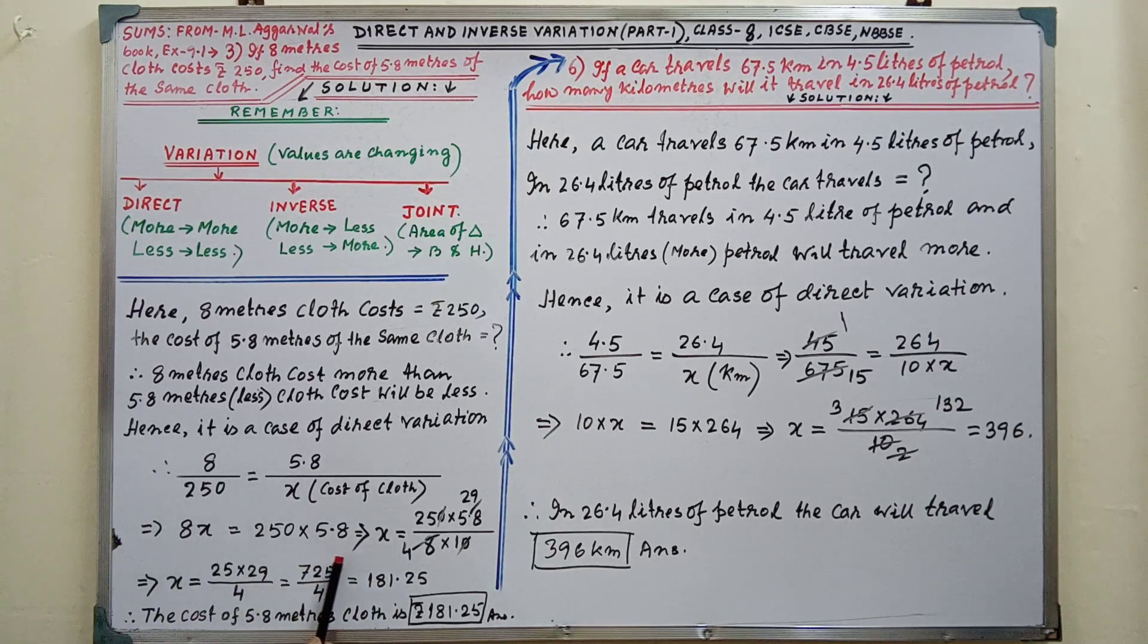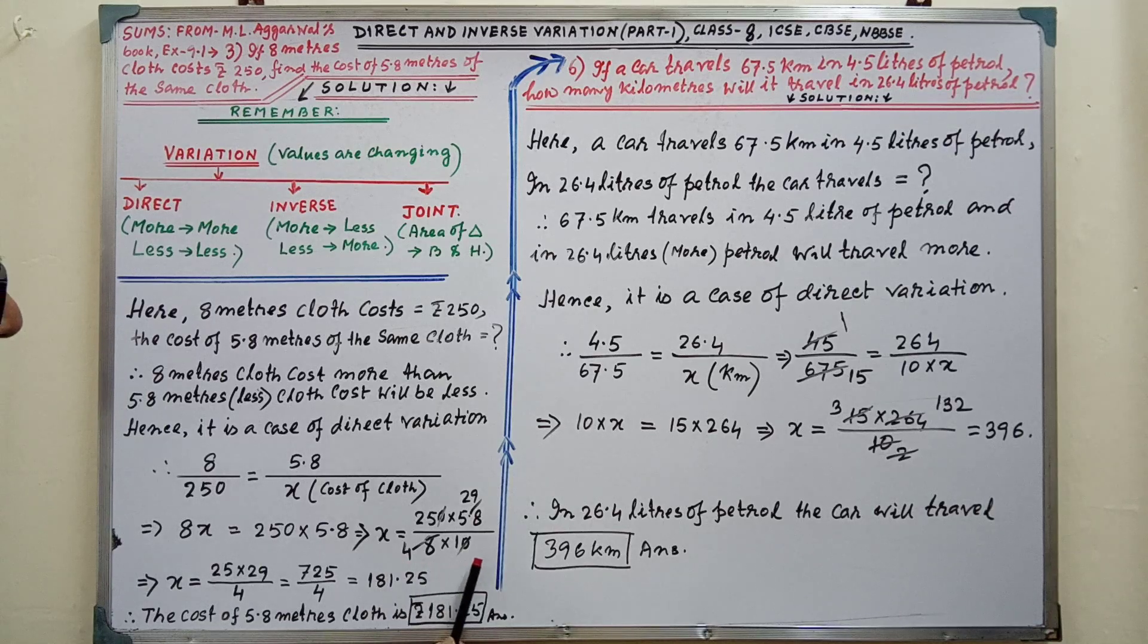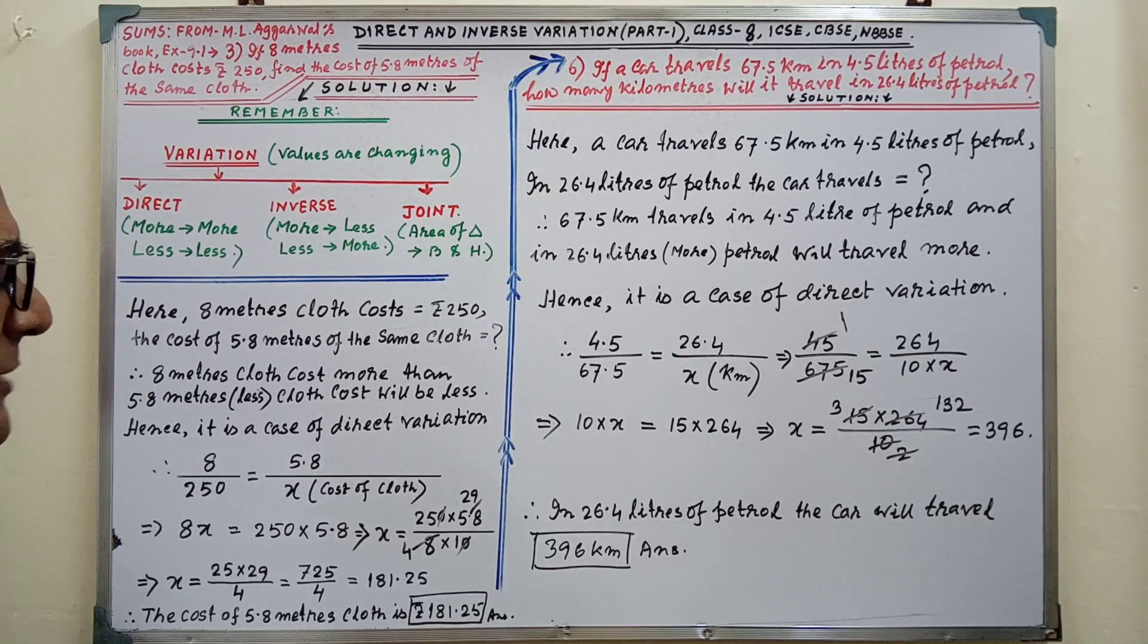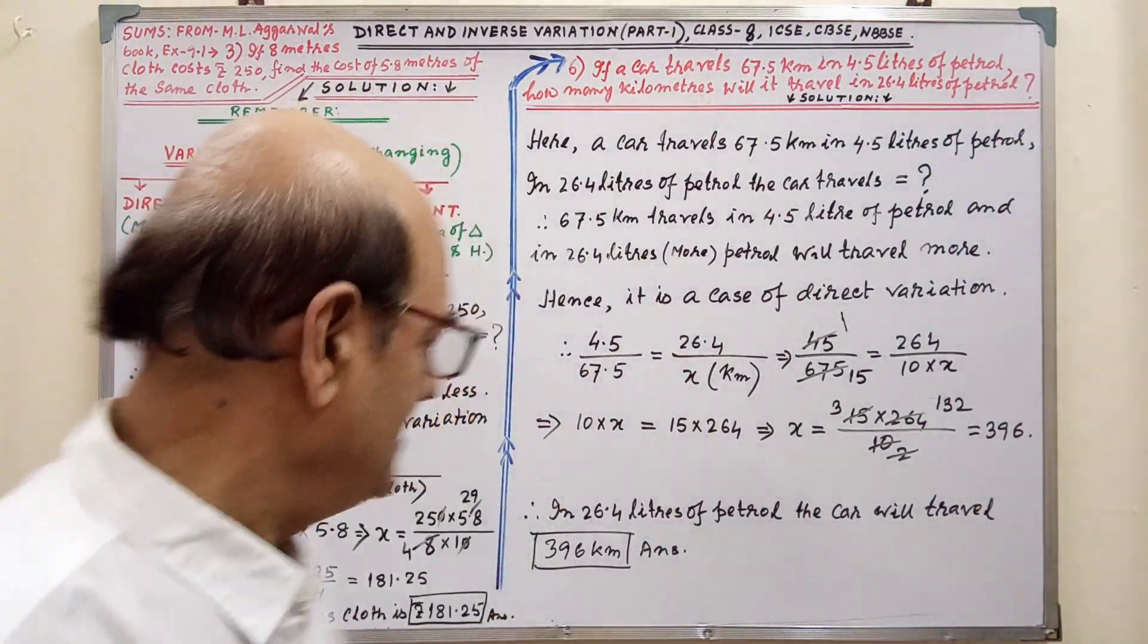By simplifying, this type of simplification you know very well. By simplification, we are getting the value of X, that is 181.25. Therefore, the cost of 5.8 meters of cloth is Rs. 181.25. This is the answer.